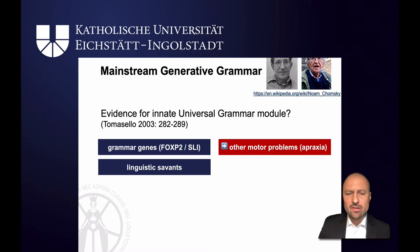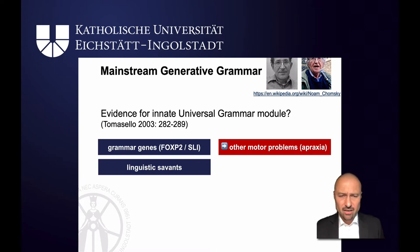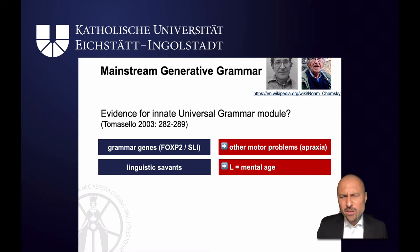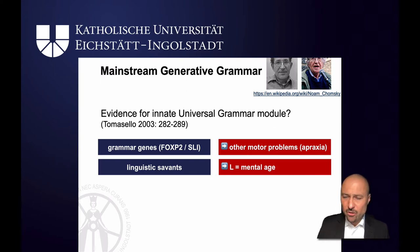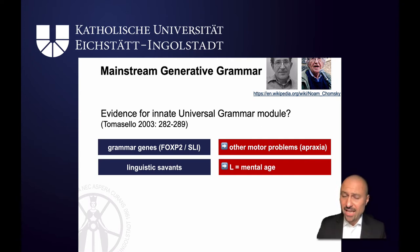Sometimes generativists will point out that there are so-called linguistic savants — people who are verbally fairly fluent but who seem to be intellectually challenged, who have a fairly low IQ. That seems to be evidence that intelligence and language are independent. But when you look more closely, IQ is always measured relative to mental age. If you look at the mental age of these linguistic savants, you find that very often their mental age is something like five or six, and their linguistic abilities compare fairly normally to kids of that age. There is nothing exceptional about them.